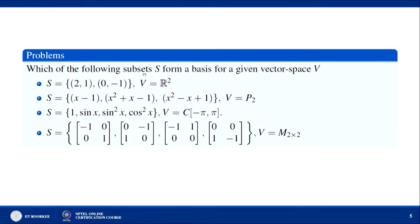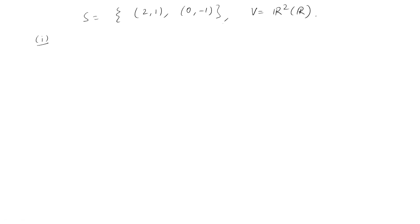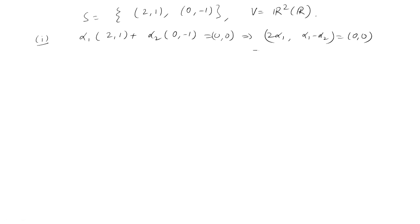Now, the problem is: which of the following subsets S form a basis for the given vector space V? First example: S = {(2,1), (0,−1)} and V = R² over the real field. First, check linear independence. Taking a linear combination and setting it equal to (0,0) gives 2α₁ = 0 and α₁ − α₂ = 0, which implies α₁ = α₂ = 0. So the set is linearly independent — the first property holds.